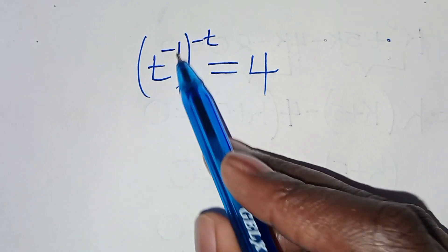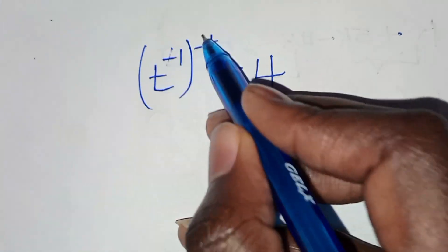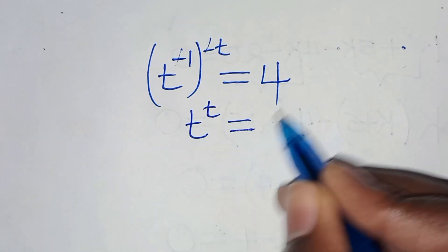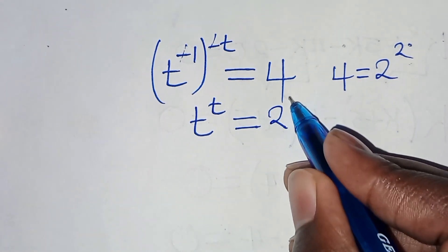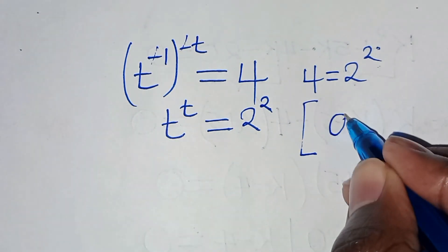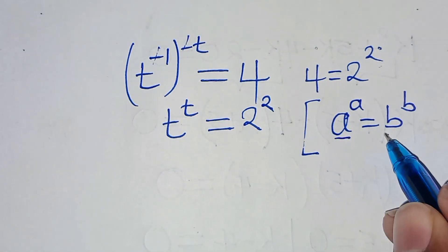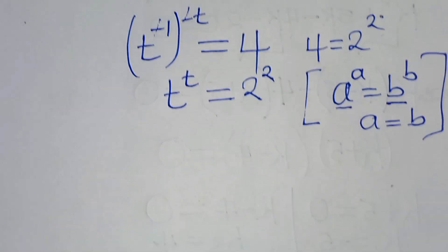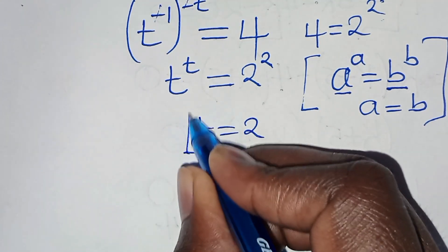We have t raised to the power of minus 1, raised to the power of minus t. Multiplying the exponents: minus 1 times minus t eliminates the negative sign, so we get t to the power of t equals 4. We can express 4 as 2 to the power of 2. Applying the property that if a^a = b^b then a = b, we get t is equal to 2.